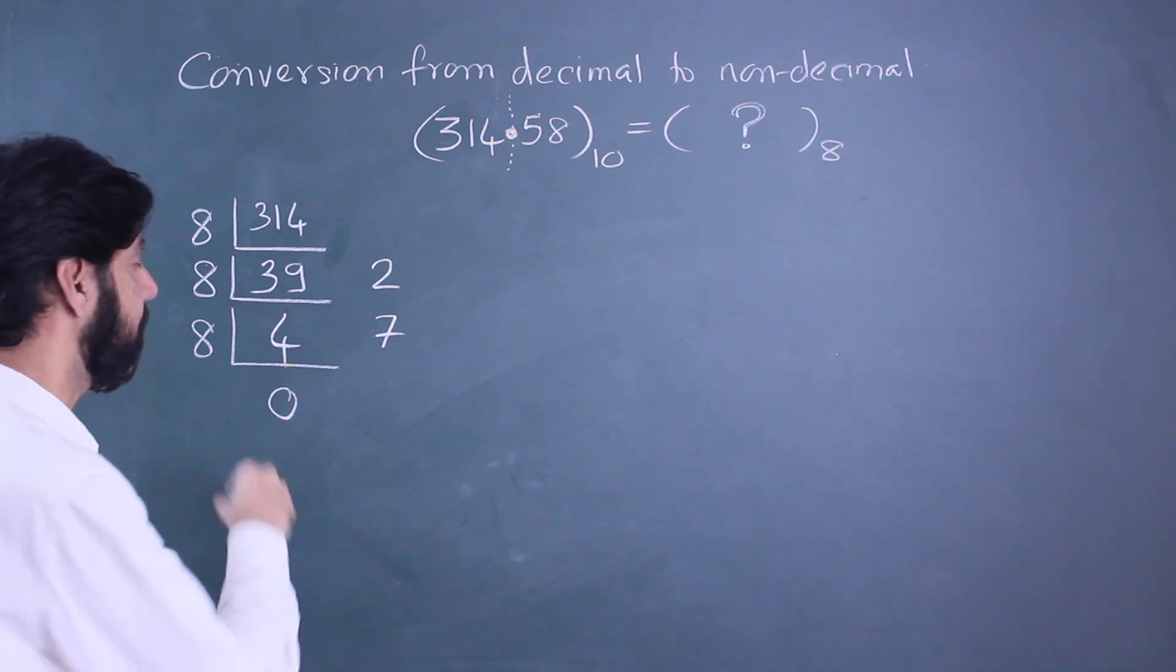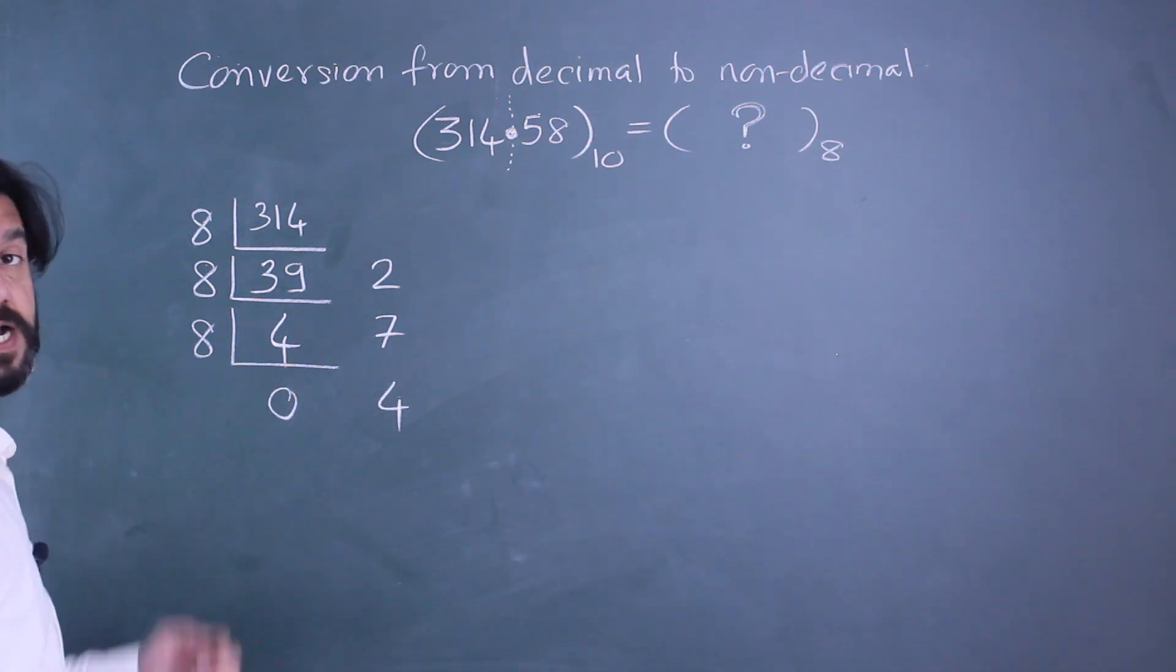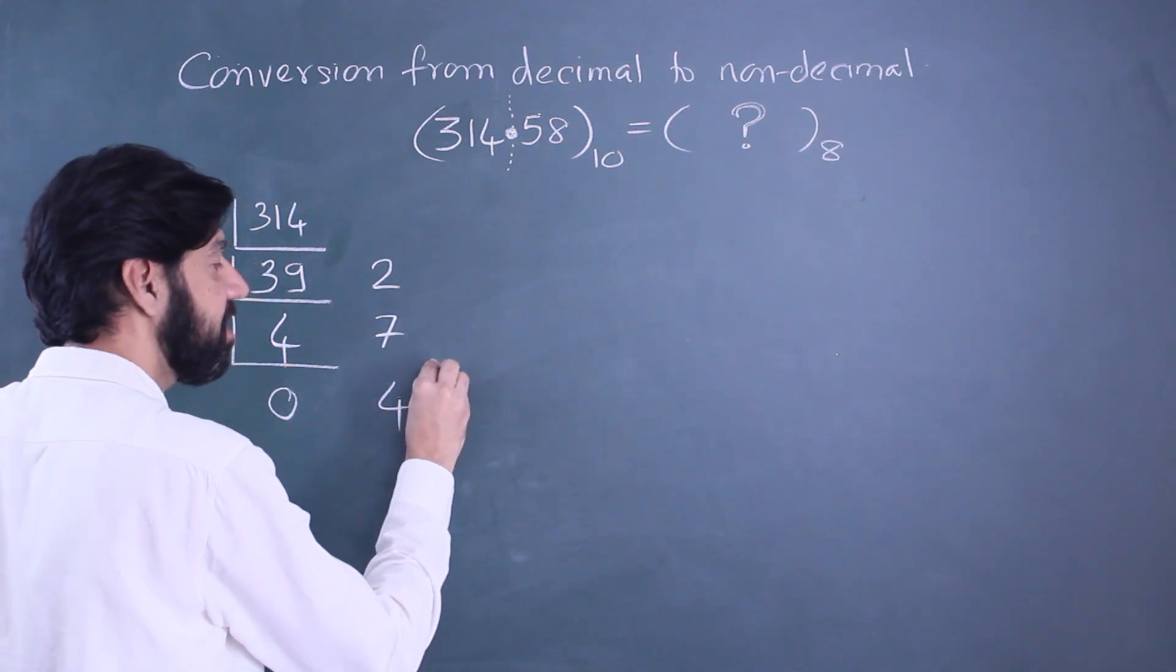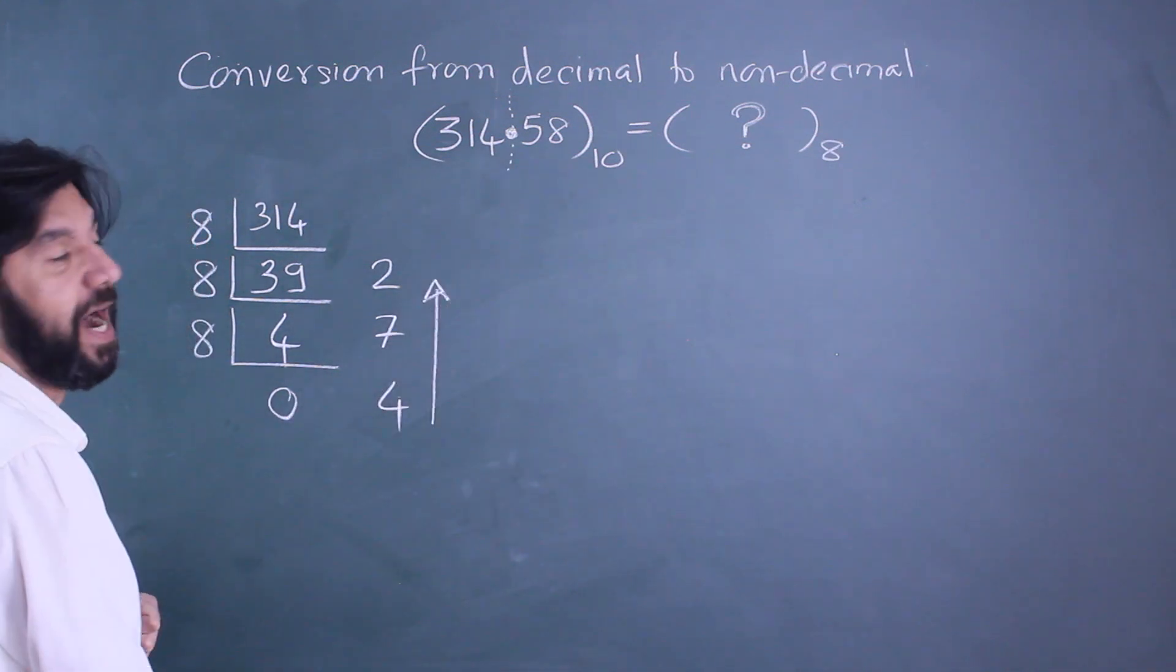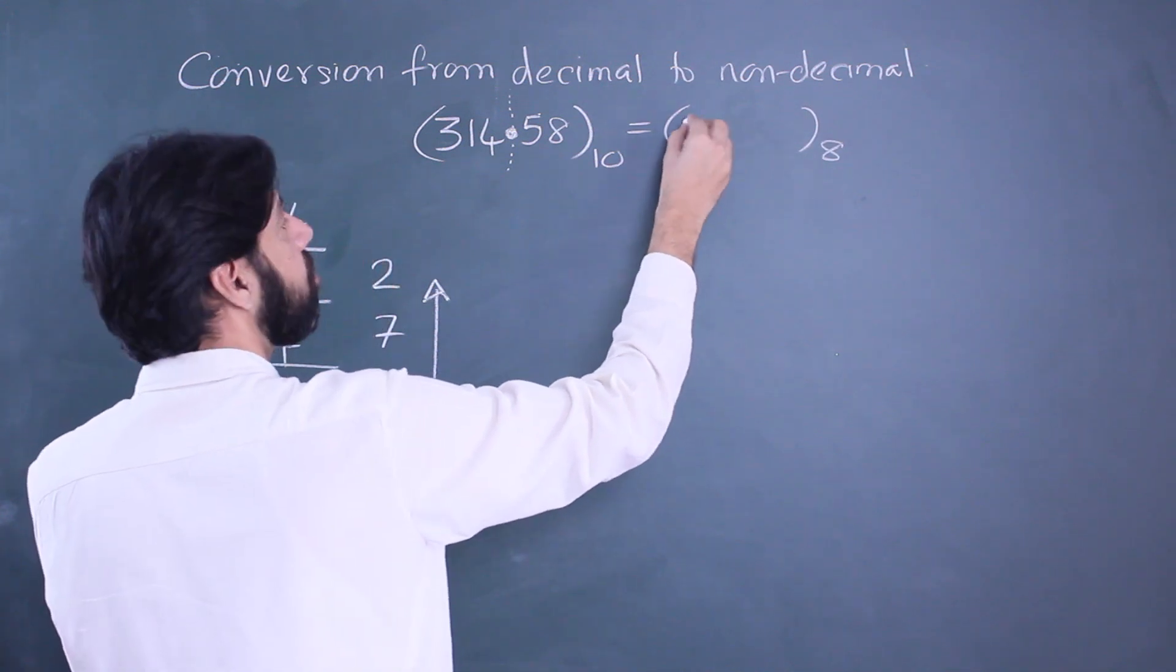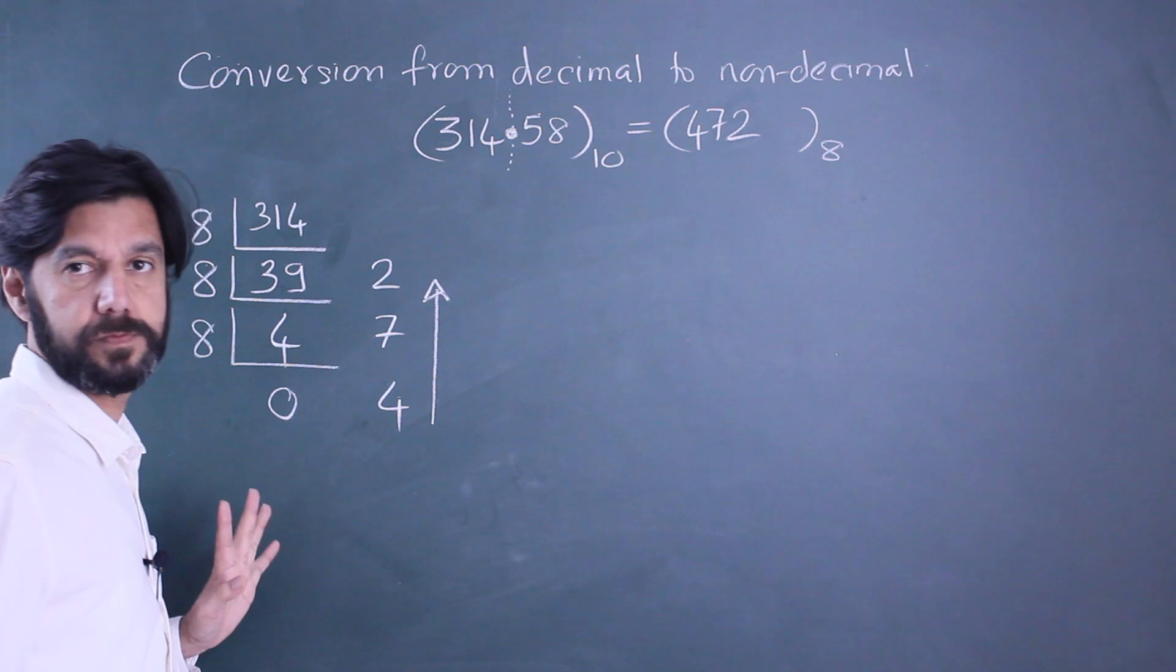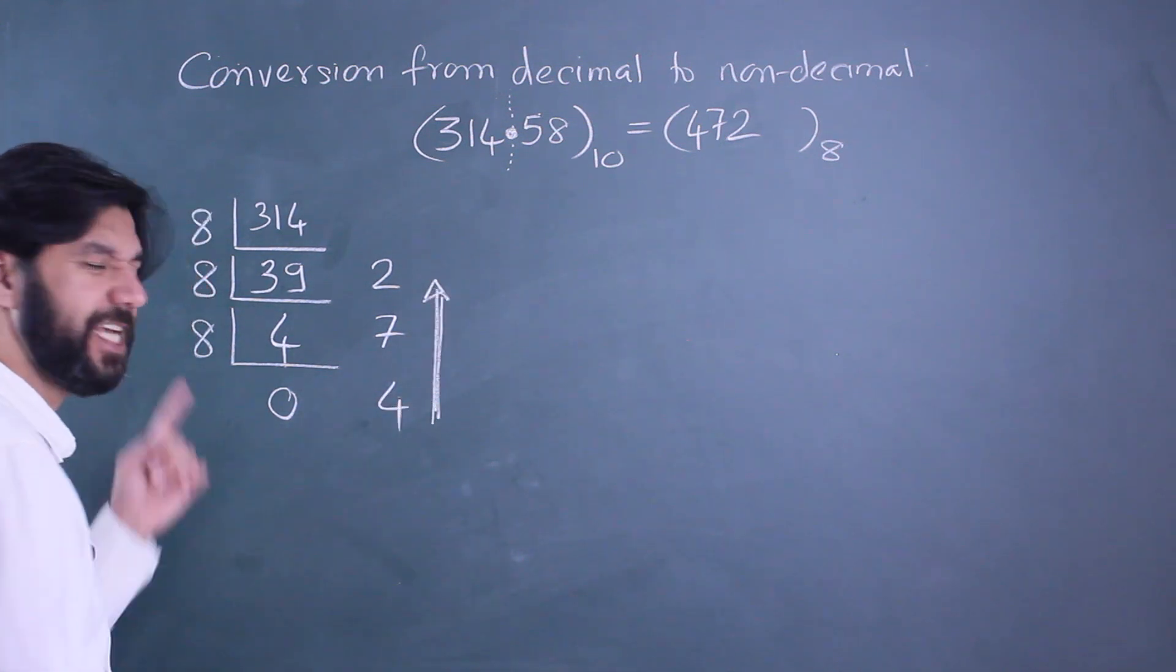Either stop at this time or continue till the quotient becomes zero. Finally, the conversion is you will have to list the remainders in the reverse order. So the integral part conversion is 472 - you have to write it in the reverse order.